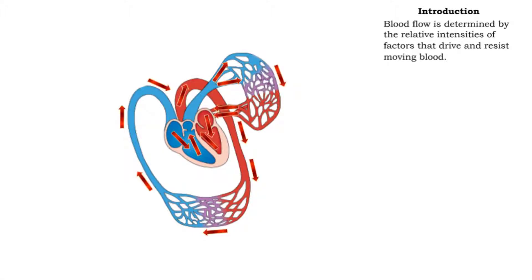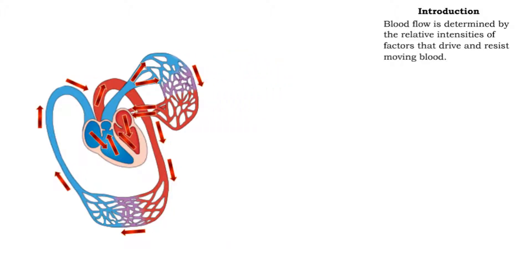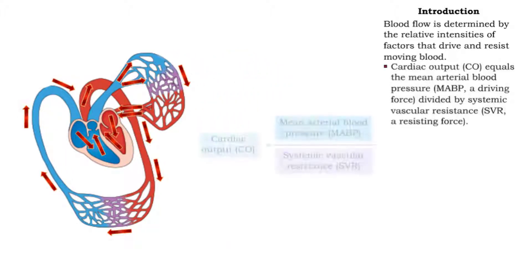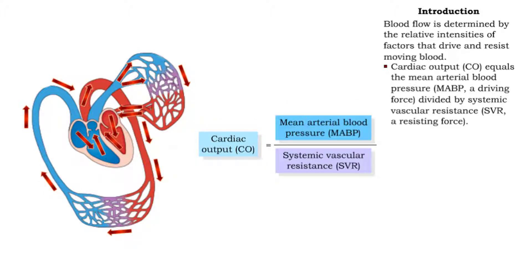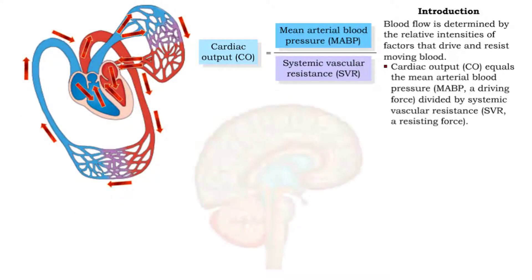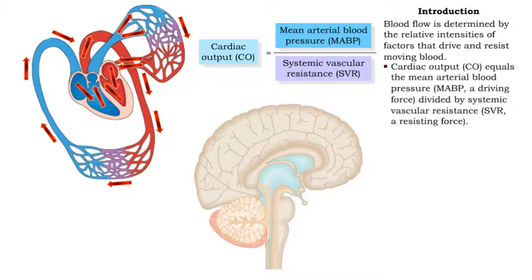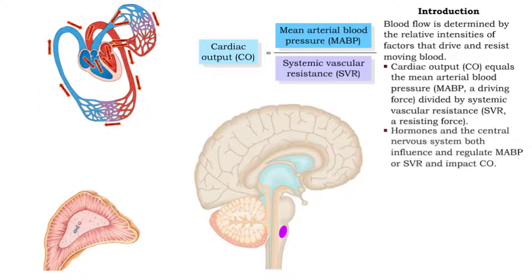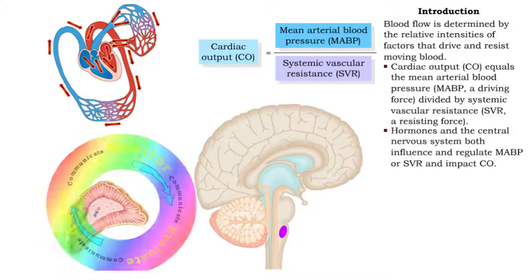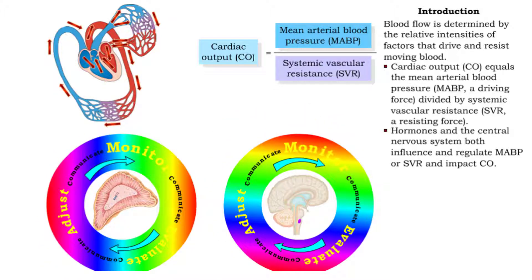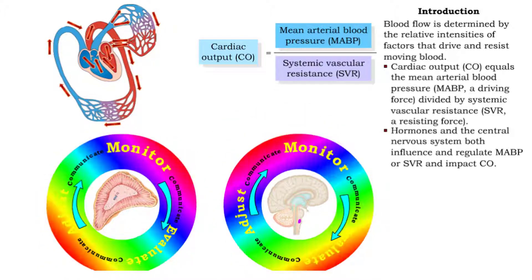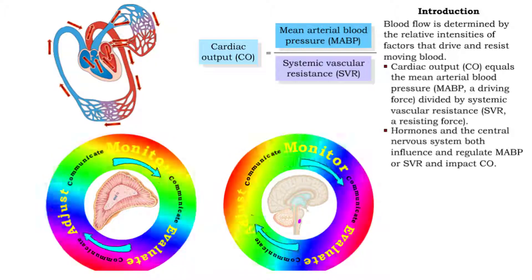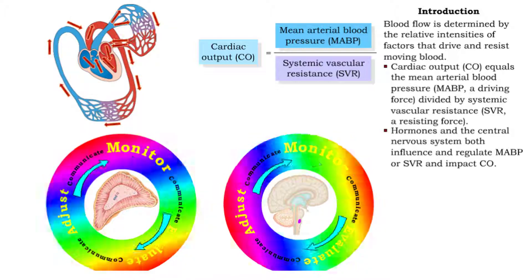In the cardiovascular system, the flow of blood is determined by factors that drive and resist moving blood. Even the system's level of production, known as cardiac output, can be measured as a ratio of driving force to resistance. Feedback loops in the central nervous and endocrine systems both change and regulate blood pressure and vascular resistance, and therefore have an important impact on cardiac output.